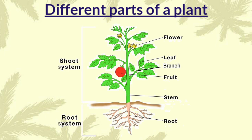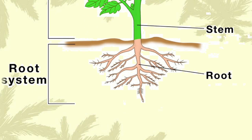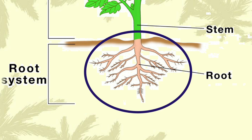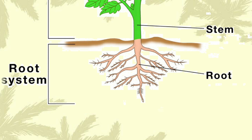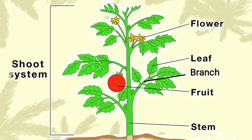Look at a picture. A plant is divided into two main parts: the root system and the shoot system. The bottom parts that are below the soil are the root system. Look here children, these are the roots. They grow below the soil. Roots help the plant to stand firmly to the ground. They also help to absorb water and nutrients from the soil to the plant.